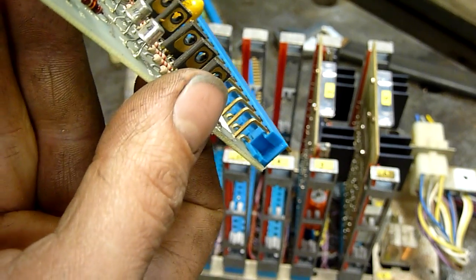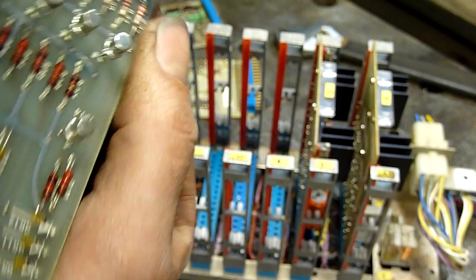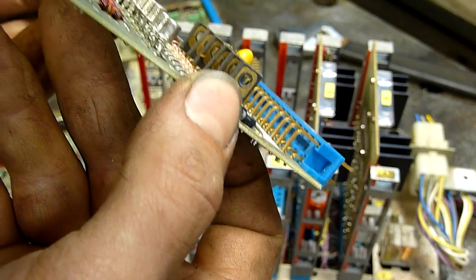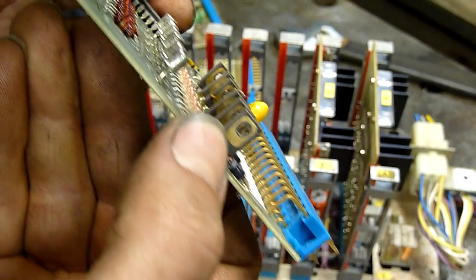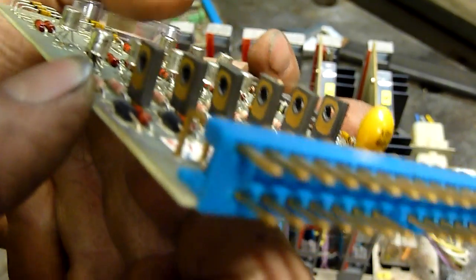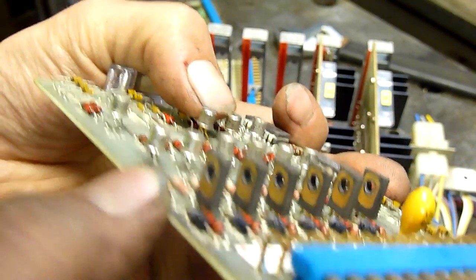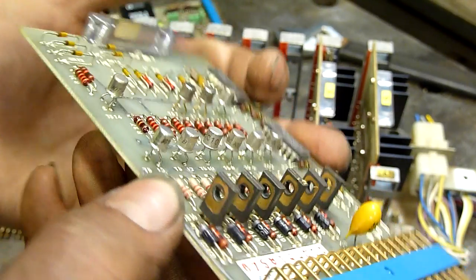These metal case transistors. BC107Bs. BC177B.